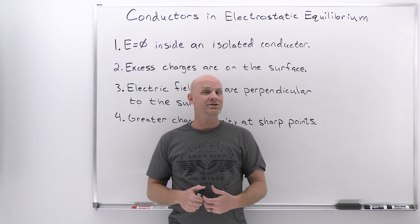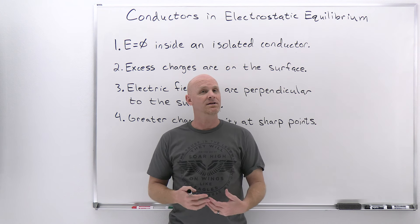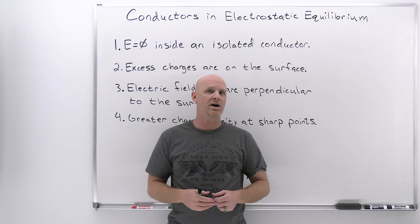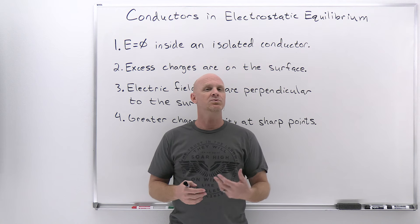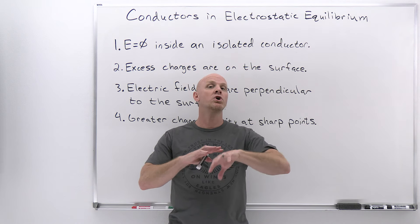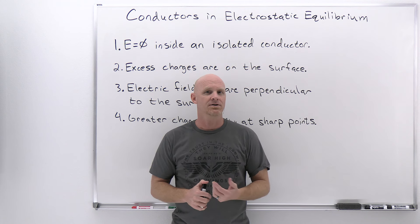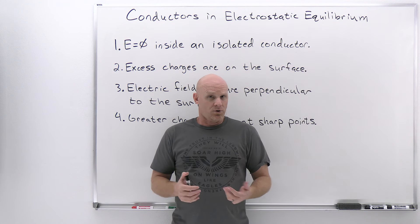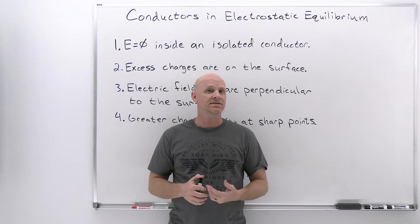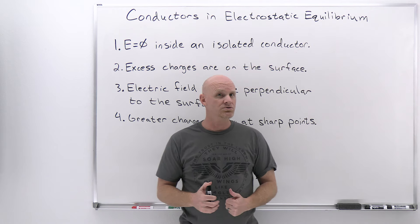For a conductor to be in electrostatic equilibrium, what it means is that even though in principle charges can move throughout it, it has reached this point of equilibrium where the charges are no longer moving. There are four rules governing a conductor that's in electrostatic equilibrium, and let's take a look at those rules.